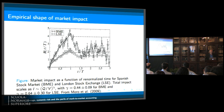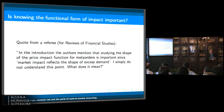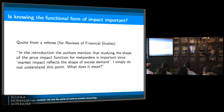I think it's very important to know the functional form of market impact. I've had many financial economists tell me that's not an interesting question — it's not worthy of a paper in a top journal. I actually have a referee report of a paper we submitted to the Review of Financial Studies that was rejected. The referee said, in the introduction the authors mention that studying the shape of the price impact function for meta-orders is important since, quote, market impact reflects the shape of excess demand — I simply do not understand this point, what does it mean?